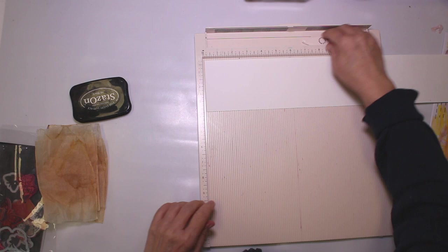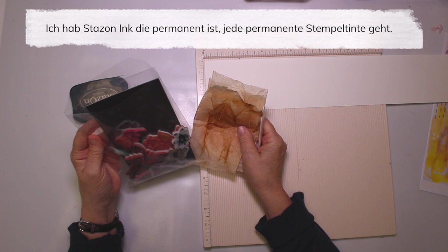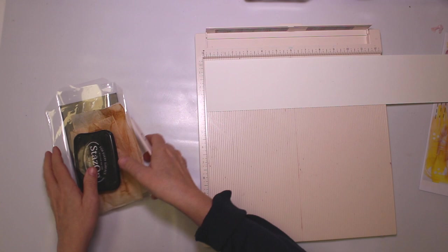I also have here some tea bags, I have all kinds of butterfly stamps and some flower stamps. I'm using the StazOn ink, which is a permanent ink. Any permanent ink would be okay.